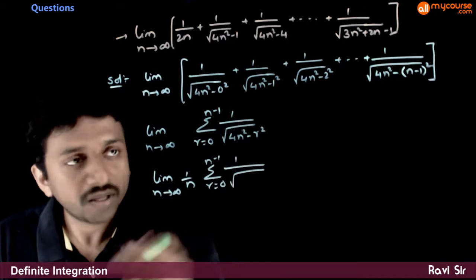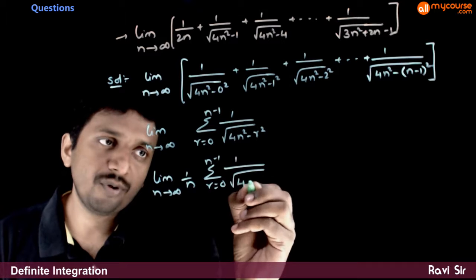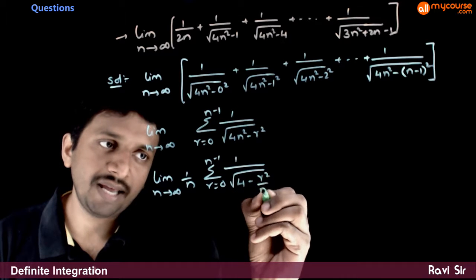1 by root of... if I take n outside from the square root n square comes out. 4 minus r square by n square.